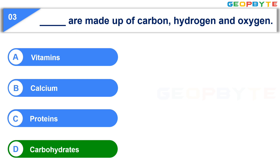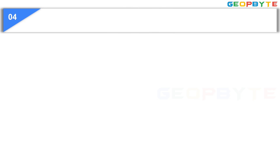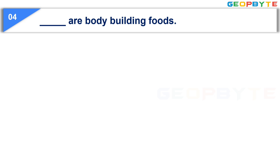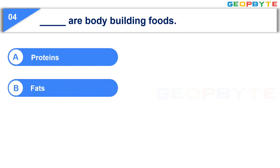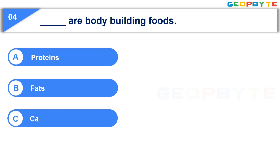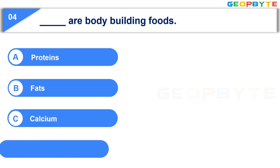The next question is: Blank are body building foods. Option A: Proteins. Option B: Fats. Option C: Calcium. Option D: Vitamins. Your time starts now.